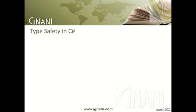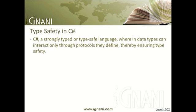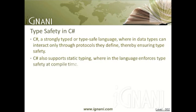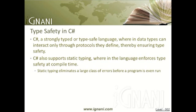Type safety in C-sharp: C-sharp is primarily a strongly typed or type-safe language, wherein data types can interact only through protocols they define, thereby ensuring type safety. For example, in C-sharp you cannot interact with a string type as an integer type without type casting. In addition to the dynamic type safety enforced by .NET CLR at runtime, C-sharp also supports static typing, wherein the language enforces type safety at compile time. Static typing eliminates a large class of errors before a program is even run, thereby taking away the burden from unit testing onto the compiler, by verifying that all the types in a program fit together correctly.